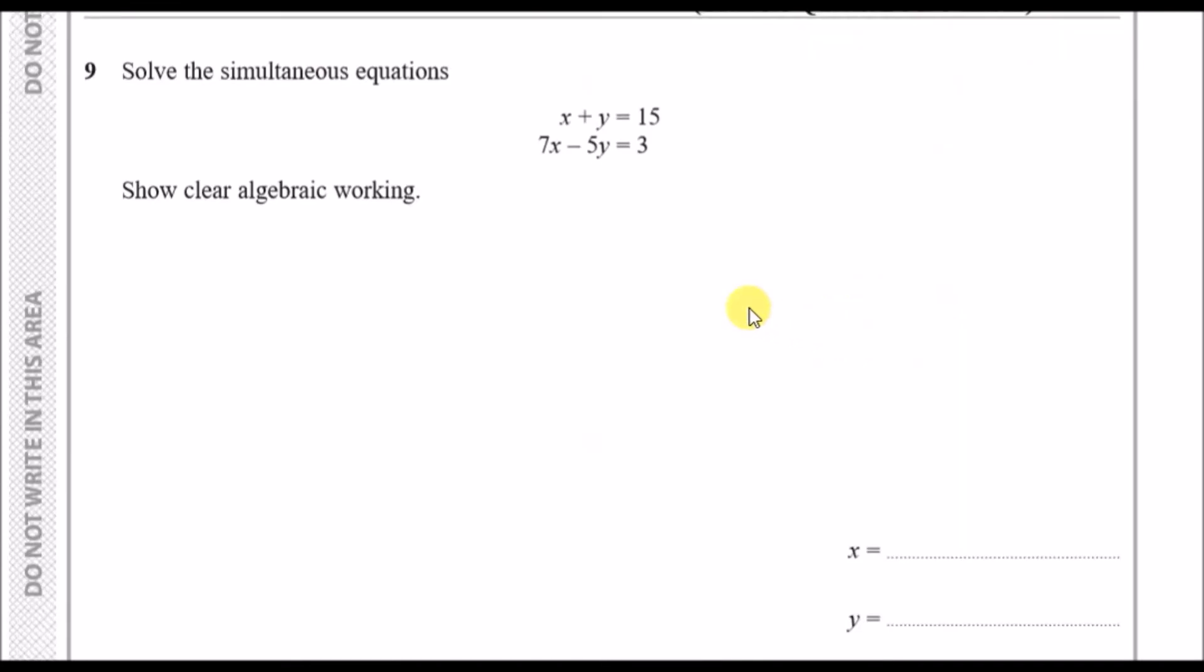Number nine. Solve the simultaneous pair of equations. Super easy, doing this super fast. You have to basically match the coefficients. Coefficients are the number in front of the x or y. The second pair has a 7x, so times the first line by 7. Times the first equation by 7, you're going to get 7x plus 7y equals 105. Copy the second one underneath exactly as it's written.